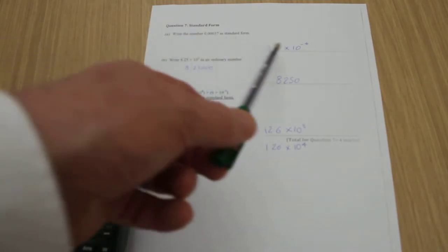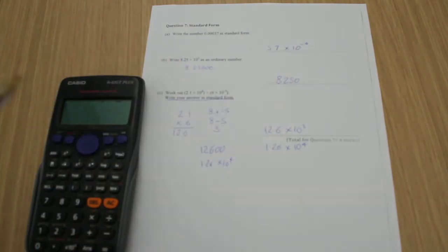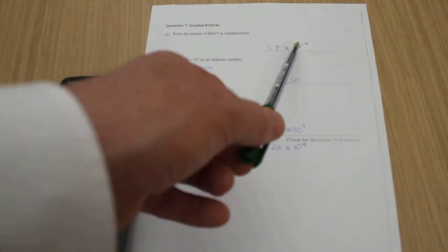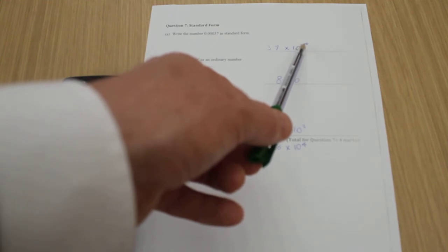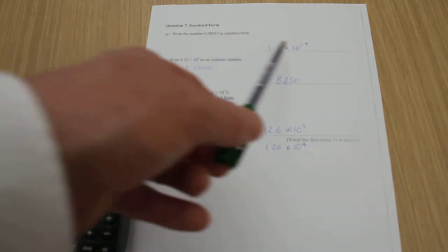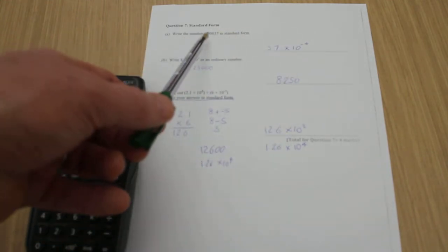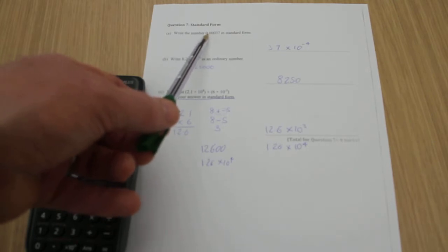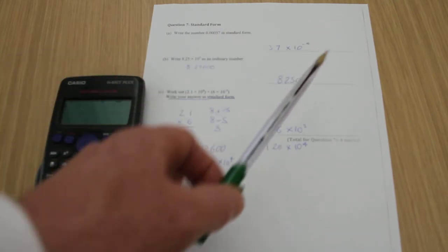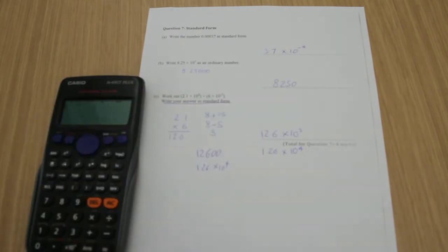Because it's really small, I know that this has got to be a negative power. So all I need to do is make sure that I get my negative there and work out how many places to move the decimal point. So I've got 1, 2, 3, 4 places to move it into the correct place, and that gives me a negative 4 index.